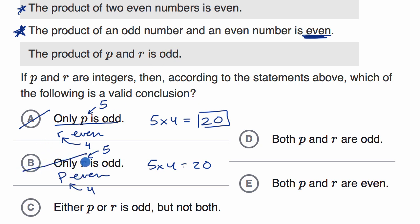This is not a valid conclusion. Once again, if you have an odd and an even, that's this second scenario up here where we know the product will be even, not odd.